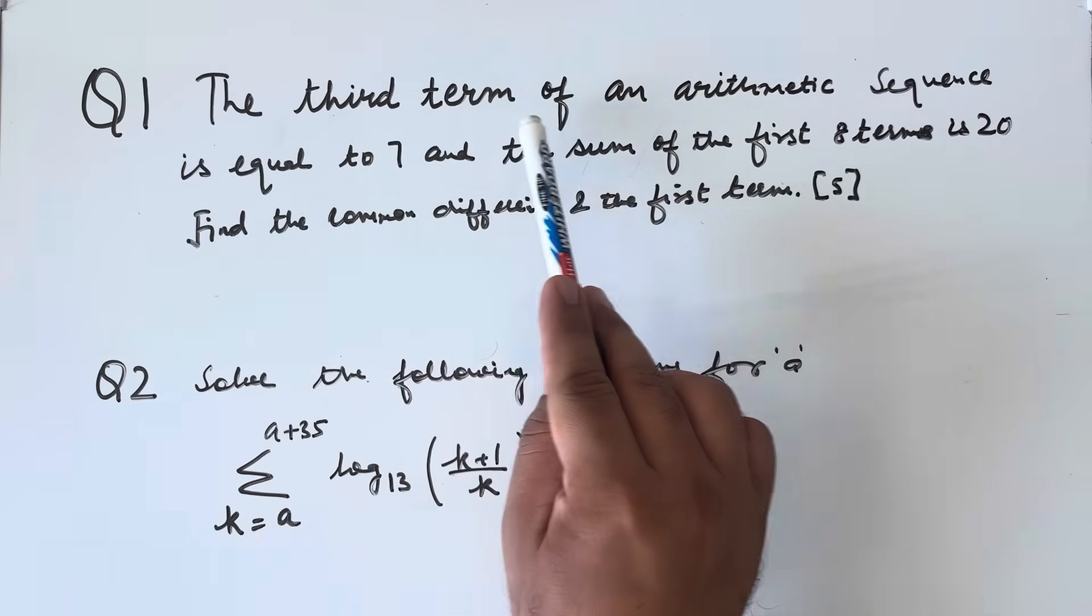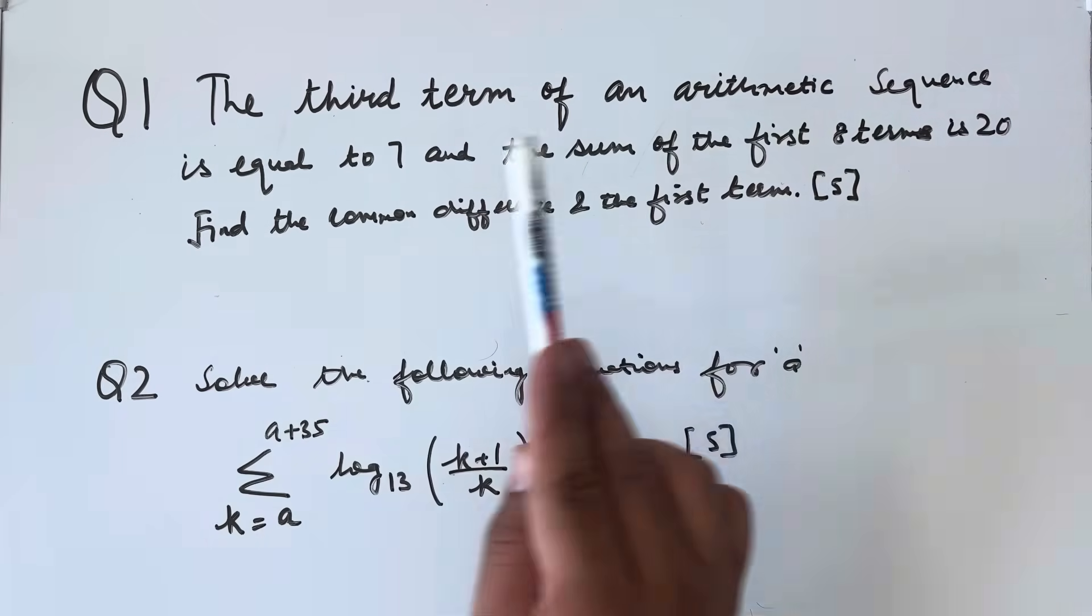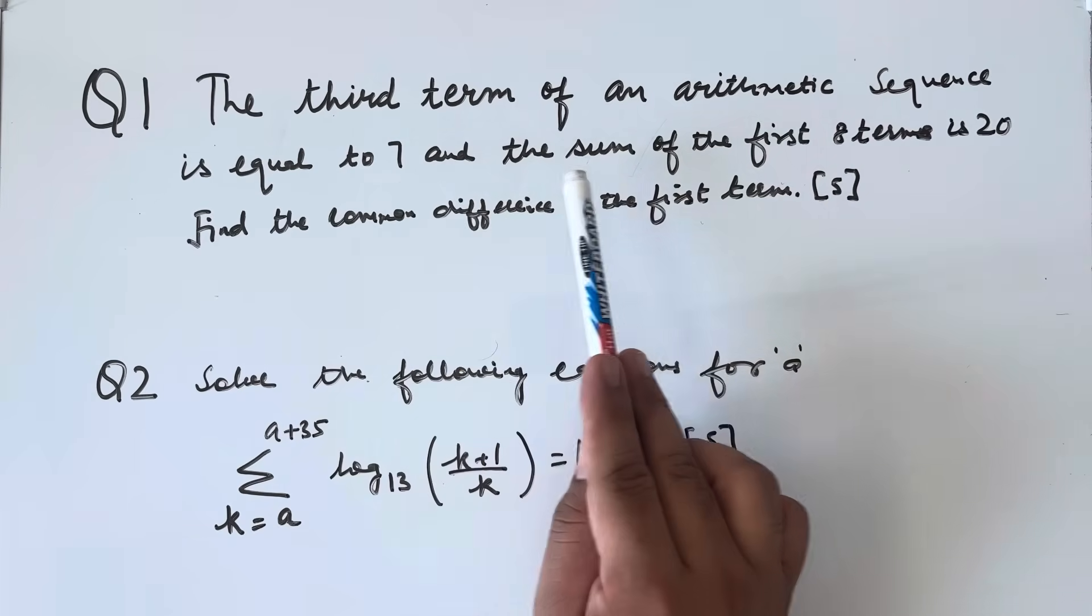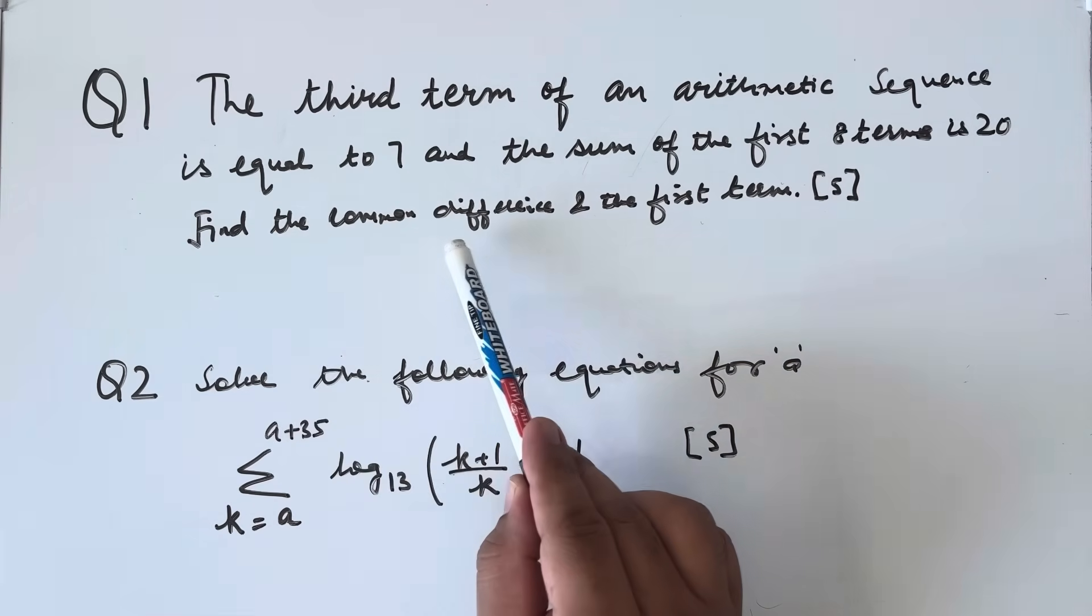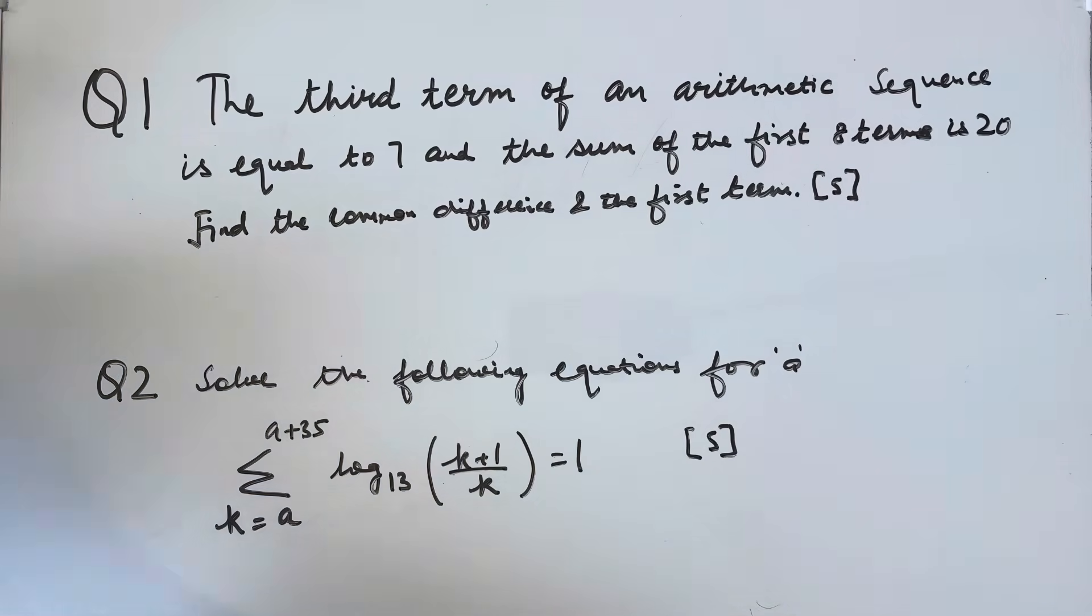Question number 1: The third term of an arithmetic sequence is equal to 7 and the sum of the first 8 terms is 20. Find the common difference and the first term.